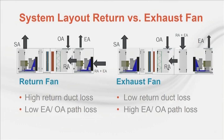Care also needs to be taken using return fan systems if there is a high loss on the outside air path or exhaust path. This would be the case if the unit is located in the building where there are long duct runs to the outside air intake or exhaust outlet. This is also the case when there is exhaust energy recovery. Here, a return fan system will often require more fan power than an exhaust fan layout.